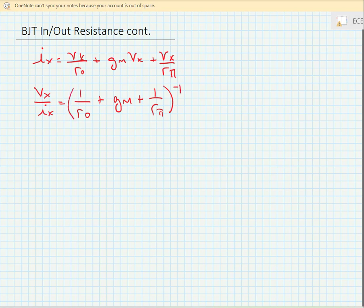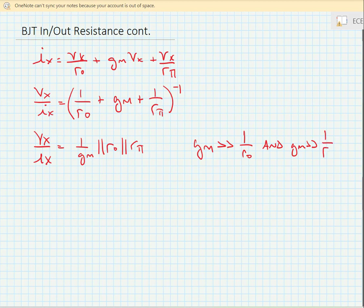Finally, we can say Vx over Ix is equal to 1 over the quantity 1 over Ro plus Gm plus 1 over Rpi. Now, typically, Gm is much greater than 1 over Rpi, and if that's the case, we can say the output resistance is approximately equal to 1 over Gm. And oftentimes, when we look into the emitter of a transistor, we will say that the resistance looking into the emitter is approximately equal to 1 over Gm.